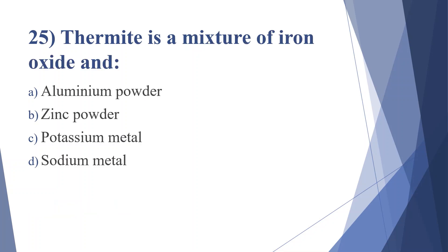Twenty-fifth question: thermite is a mixture of iron oxide and — option A: aluminium powder, option B: zinc powder, option C: potassium metal, option D: sodium metal. Answer is option A, aluminium powder.